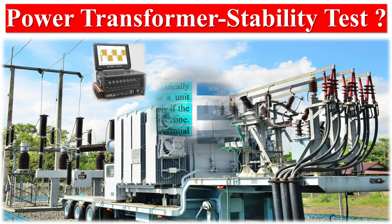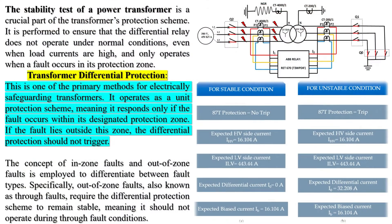The stability test of a power transformer is a crucial part of the transformer's protection scheme. It is performed to ensure that the differential relay does not operate under normal conditions, even when load currents are high, and only operates when a fault occurs in its protection zone.